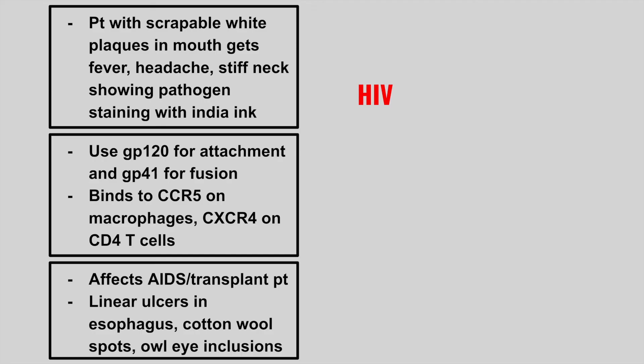The next virus uses GP120 for attachment and GP41 for fusion, and it binds to CCR5 on macrophages and CXCR4 on CD4 T cells. This is also HIV. The next one affects AIDS and transplant patients, and we see linear ulcers in the esophagus, cotton wool spots on fundoscopy, and owl eye inclusions. This is CMV, which really likes to affect immunocompromised patients.